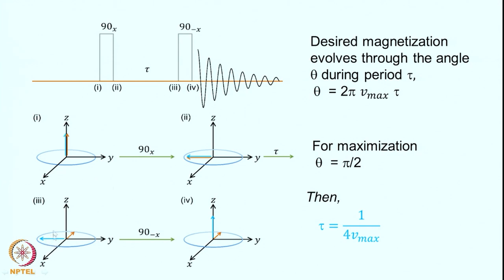You wait for a time such that the magnetization of interest has rotated by 90 degrees — this maximizes its signal. The angle of rotation in the transverse plane is 2π times nu_max times tau. If you want it rotated by pi/2 (90 degrees), set theta equal to pi/2, which gives tau = 1/(4 × nu_max). Adjusting tau to this value means the desired magnetization has rotated by 90 degrees and is now along the x-axis.